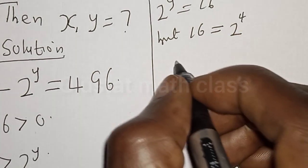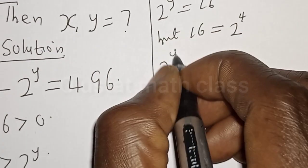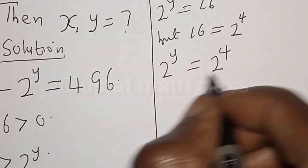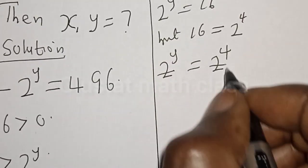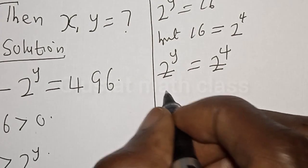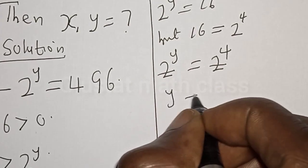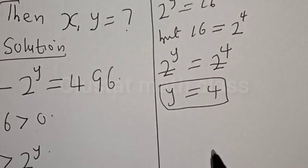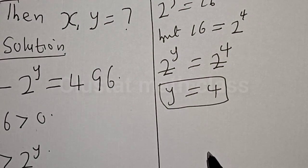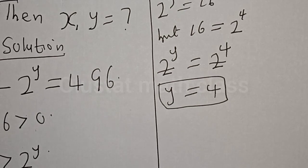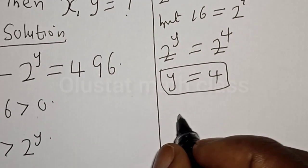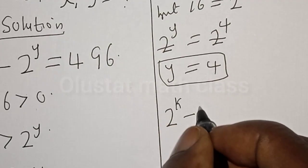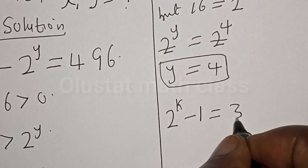Then we have 2 raised to power y is equal to 2 raised to power 4. They have the same base, so the bases cancel. Therefore y is equal to 4. We've gotten the value of y to be 4. Also, from the second equation, we have 2 raised to power k minus 1 is equal to 31.